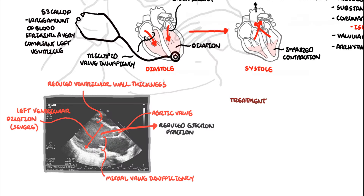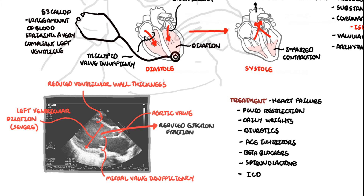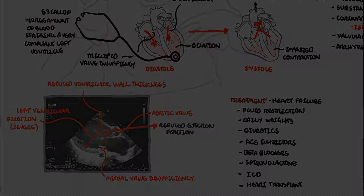Treatment for dilated cardiomyopathy is the same as heart failure therapy: fluid restriction, daily weights, diuretics, ACE inhibitors, beta blockers, and spironolactone. There is a role for implantable cardioverter defibrillators (ICDs) in people who have heart failure and who are at risk of dying from arrhythmia. The last line, obviously, is a heart transplant.